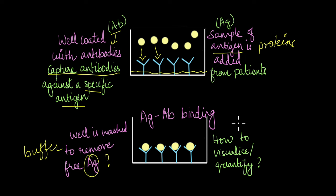But now a question arises: how do we visualize or quantify this reaction? First of all, how do we make sure that the antigen and the antibody have bound together? These are microscopic interactions happening at the molecular level. We cannot see it with the naked eye. How do we visualize it? And how do we quantify the number of antigens present in the sample?